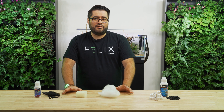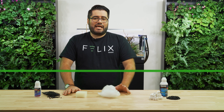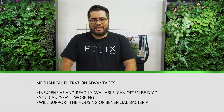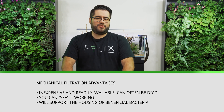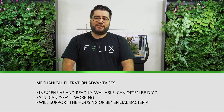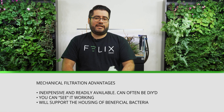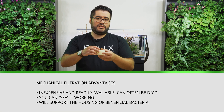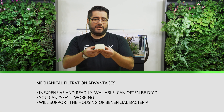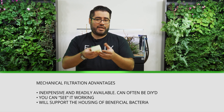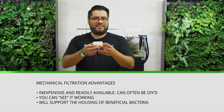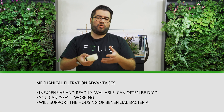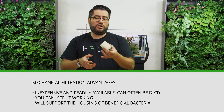Two main advantages of these types of media are that they are super easy to replace and available at any pet store, so you should have no issues finding them. Another advantage is that you can actually see these items working — as particles are being trapped in the sponge or floss, it will change color depending on what it's trapping. When you see it getting thick and mucky, you can remove it, clean it, place it back in, or over time just replace the sponge altogether.